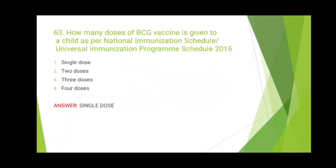The 63rd question is from the National Immunization Schedule 2015. Make sure you learn the most recent National Immunization Schedule — the dosage and administration site of all vaccines in NIS should be learned. If you have learned the whole code provided in Drona, you can answer this question within seconds. The code for birth vaccines: 'old people busy hai' means at birth you give OPV, BCG, and Hepatitis B. Going through the entire code, you will know that BCG is given just once — a single dose.